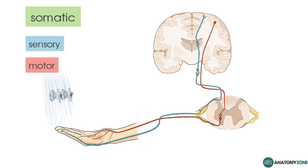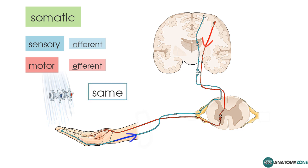The sensory division of the peripheral nervous system is known as the afferent division, whereas the motor component — the part which results in skeletal muscle contraction — is known as the efferent division. In this diagram, the blue axon represents the sensory afferent division, bringing the stimulus from the periphery into the center, and the red neuron represents the efferent motor division. The mnemonic for this is SAME: Sensory Afferent, Motor Efferent.